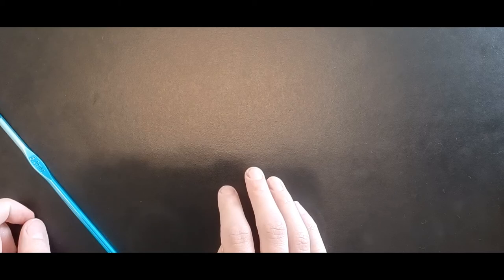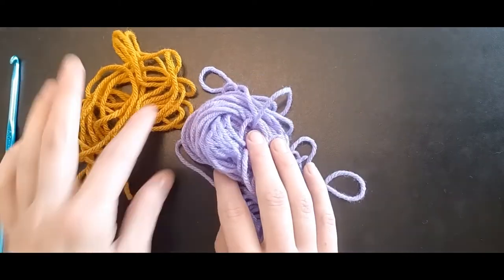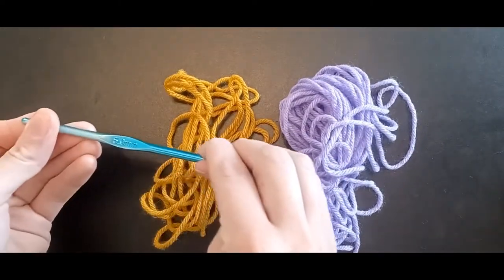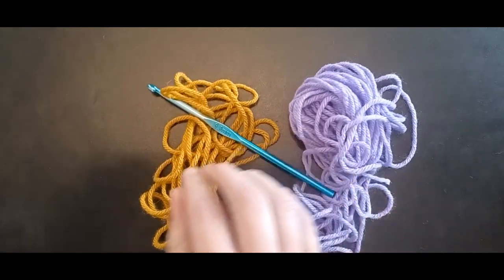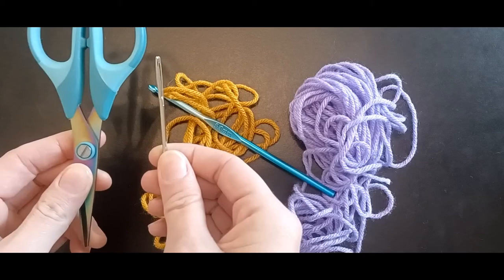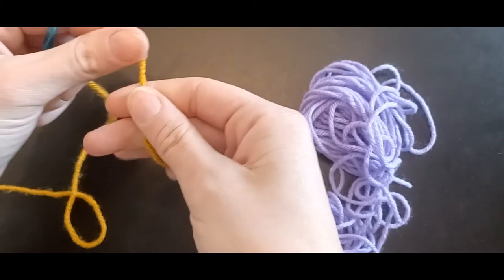For this tutorial you'll need two colors of worsted weight yarn, one for the center and one for your petals. You'll need a five millimeter crochet hook and of course you'll want to sew in your ends and cut your strings off, so you'll need your darning needle and scissors.